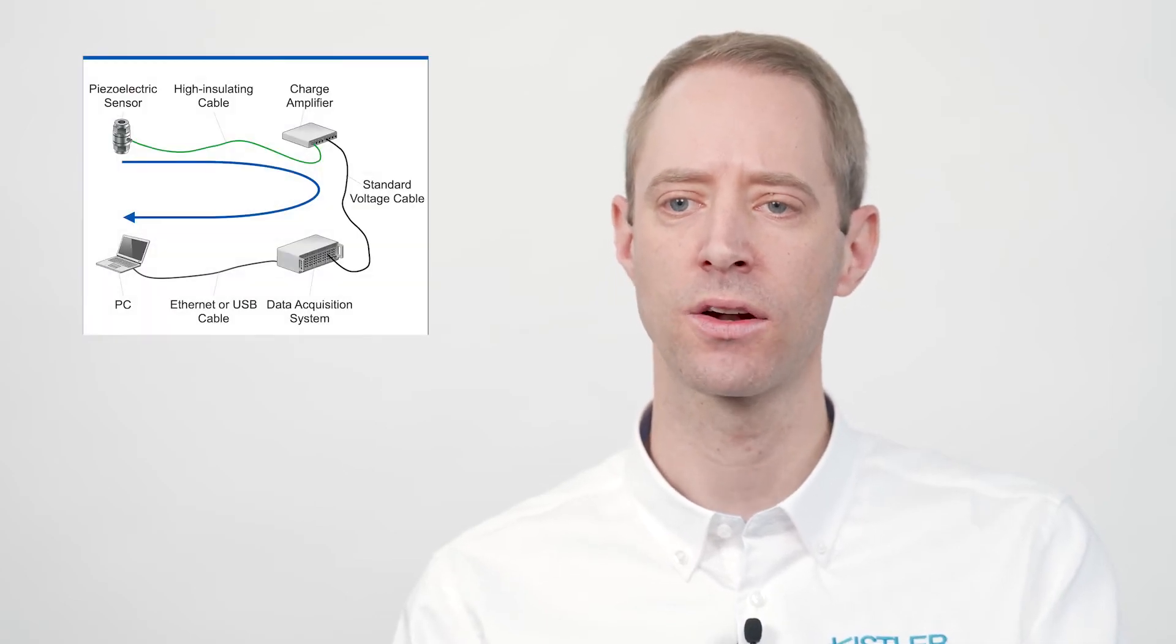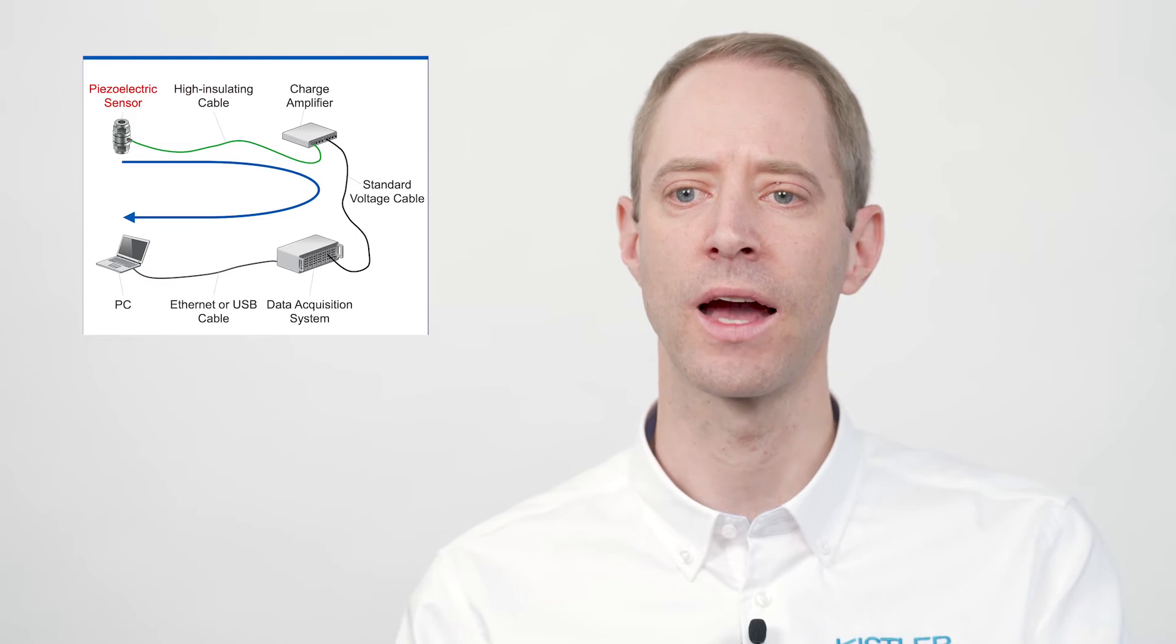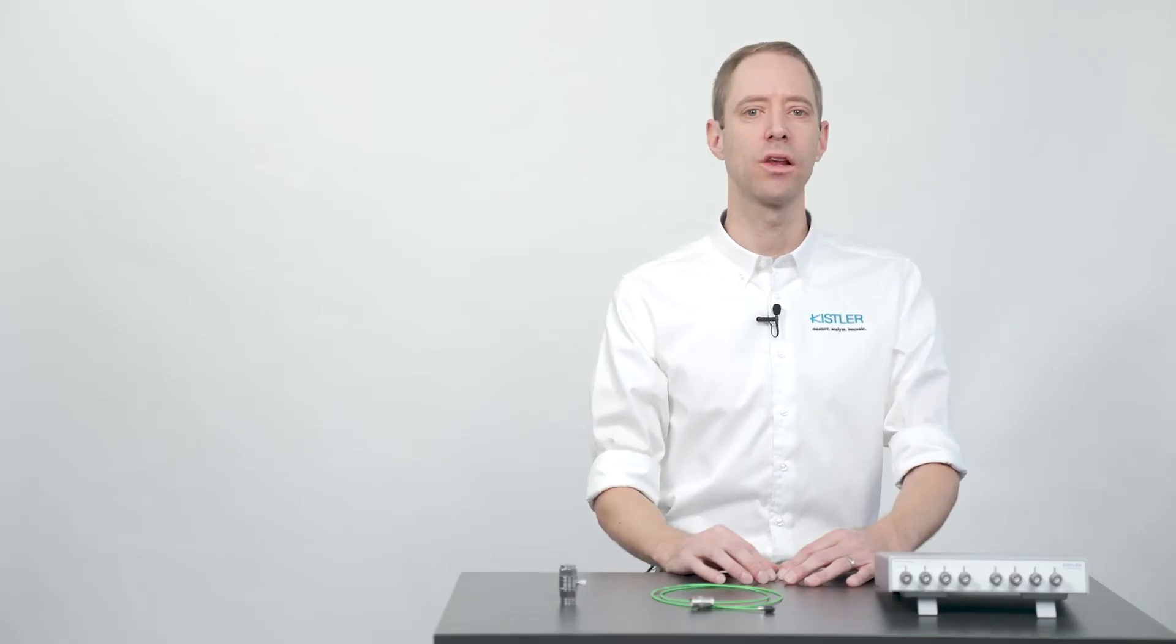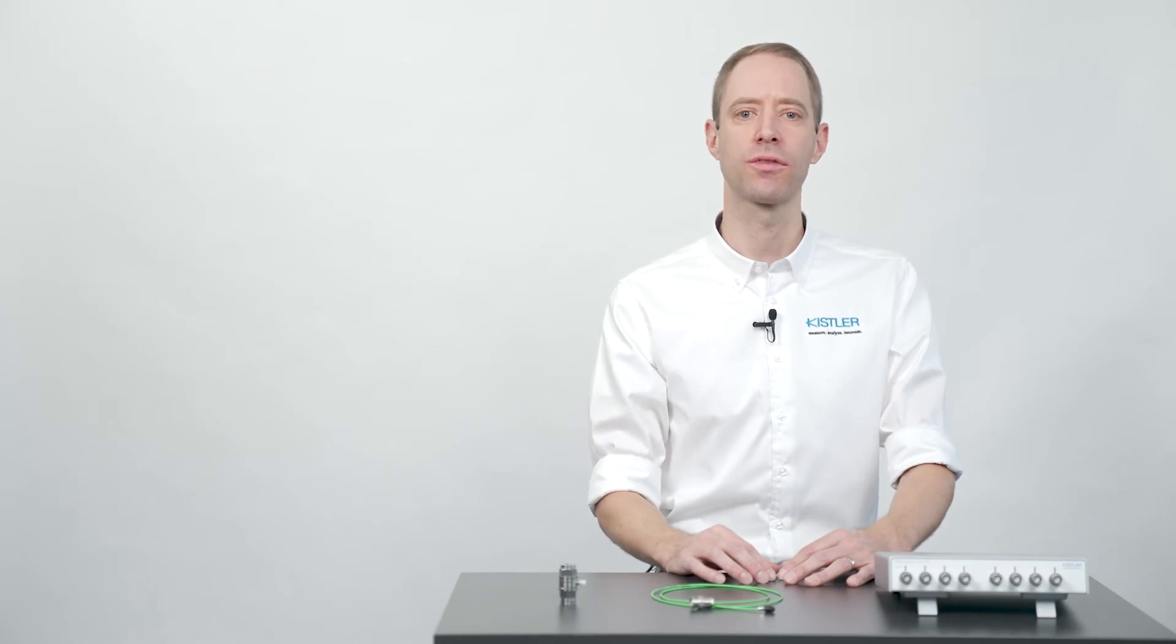So, what are potential sources of drift in a piezoelectric measuring chain? Since drift is a parasitic current, only components where a charge signal is generated, transferred or processed can contribute to drift. Specifically, these are the piezoelectric sensor, the high insulating cable and the charge amplifier. Let's take a look at the potential sources of drift for each component.